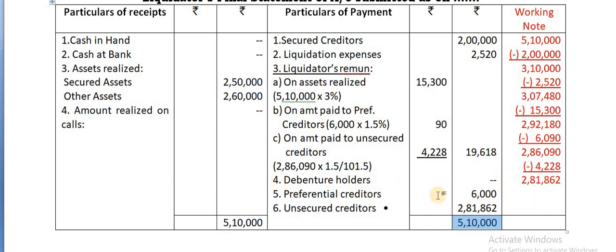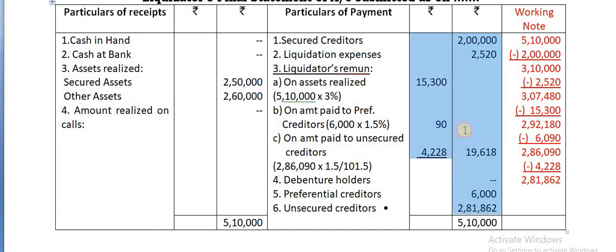If you are not getting that total, it means you have made an error somewhere. This total is not deducted separately because you take individually these amounts are separated.